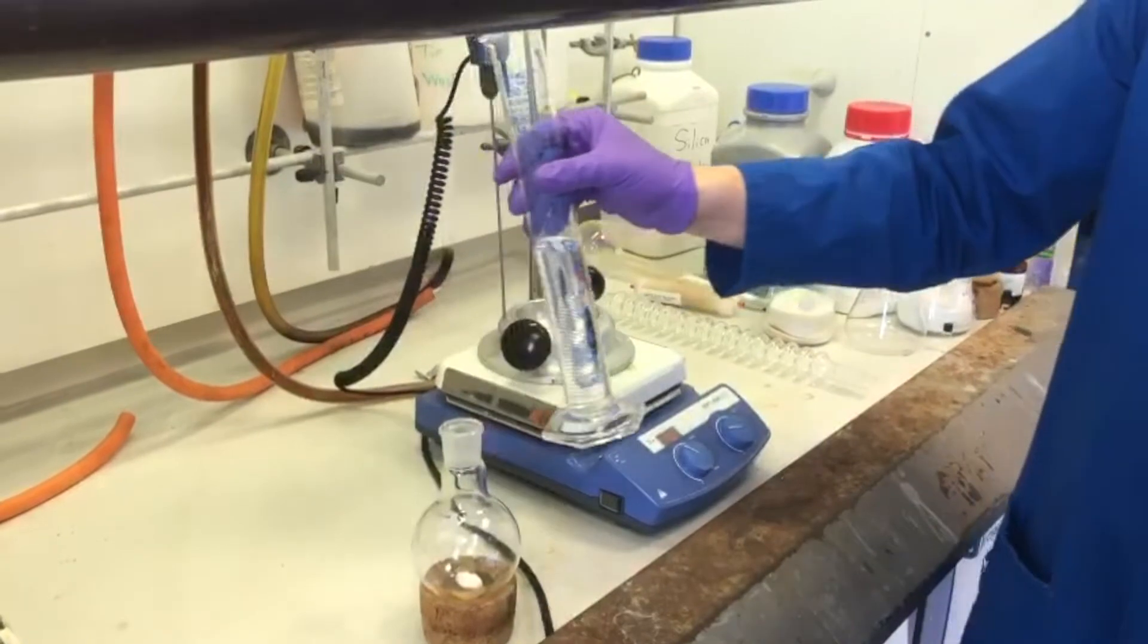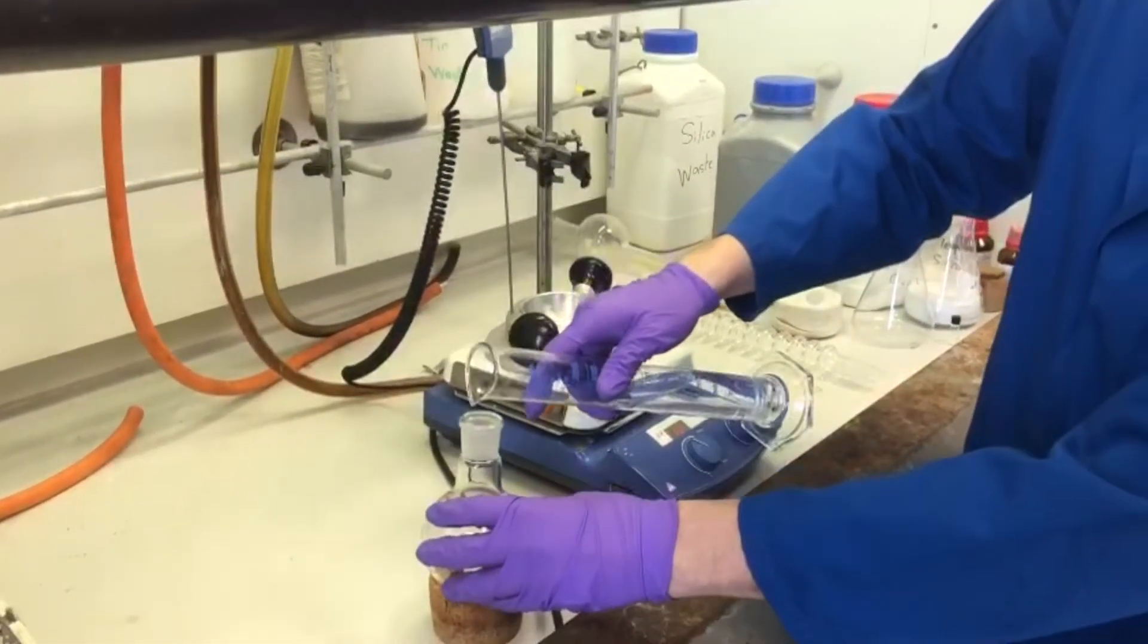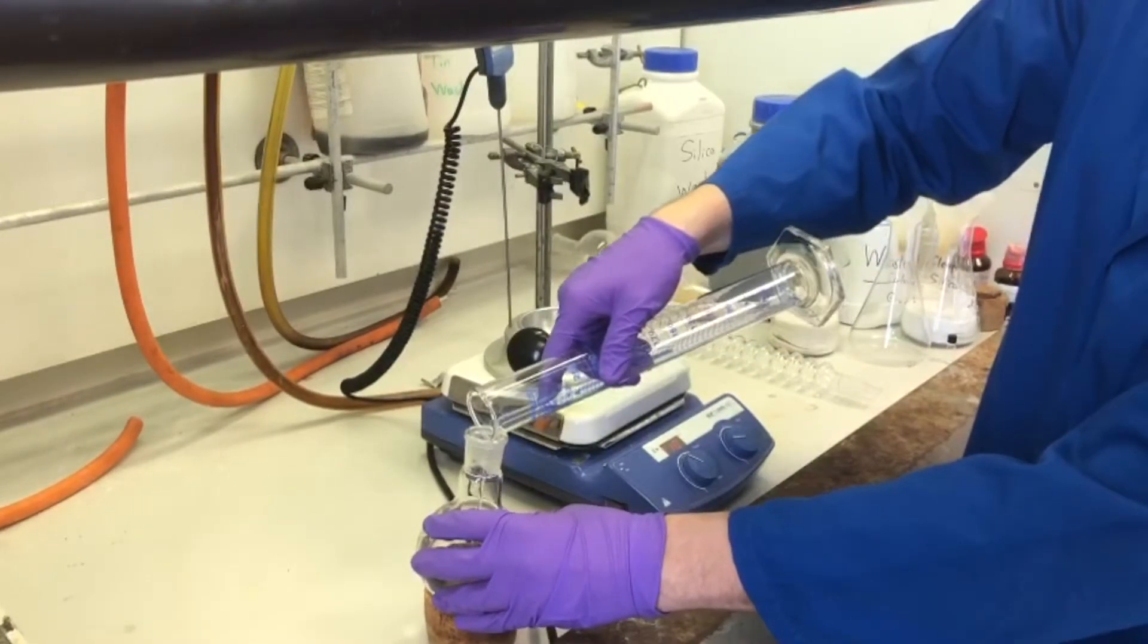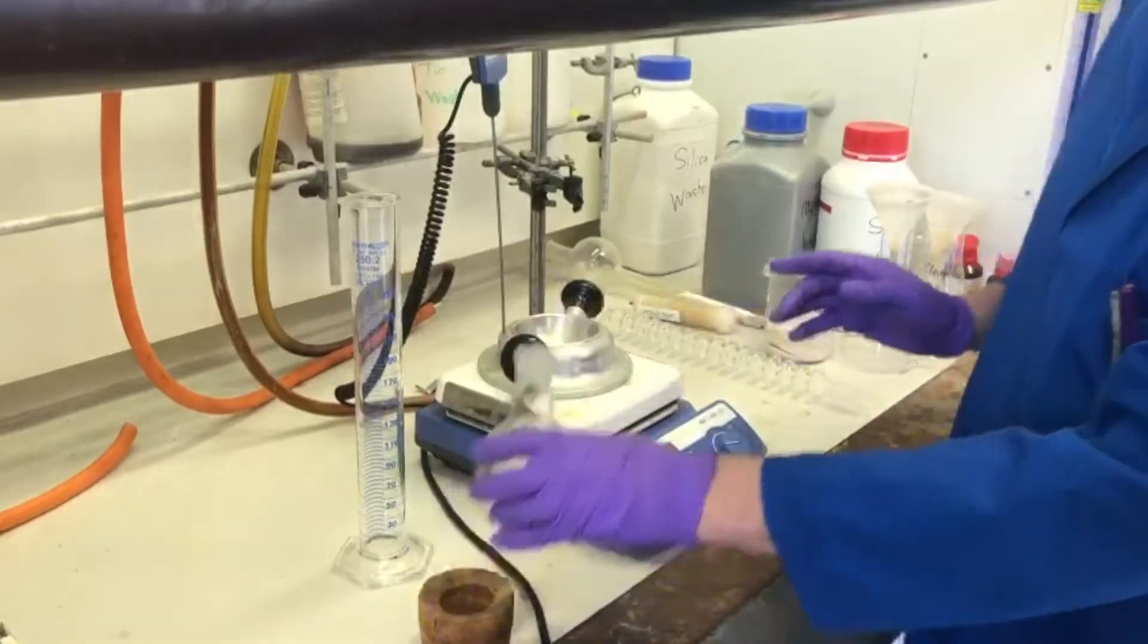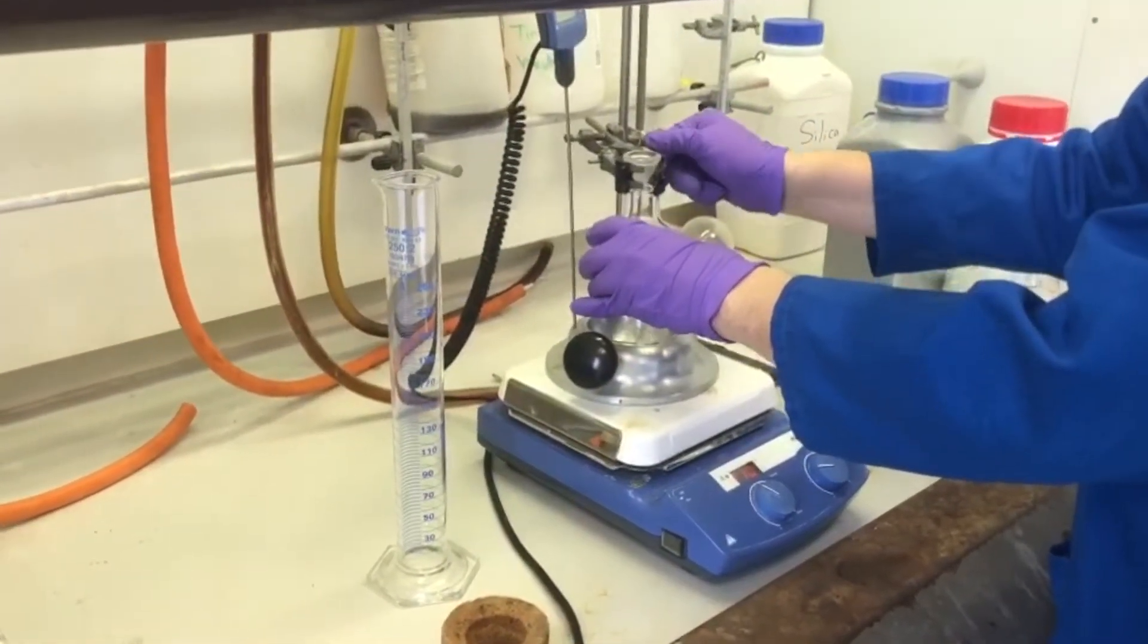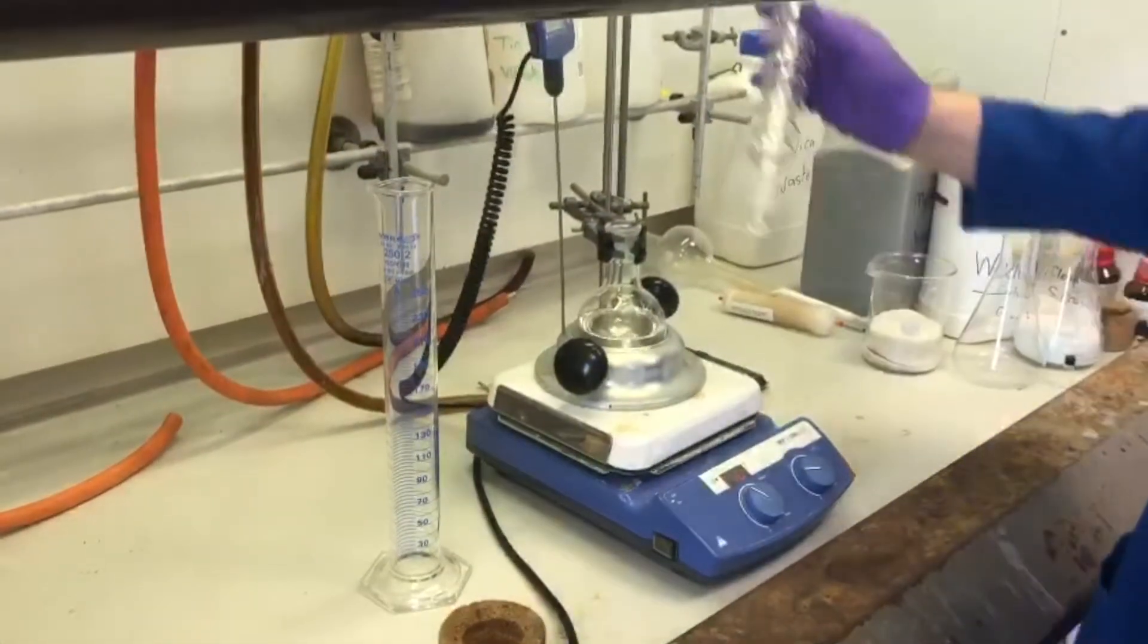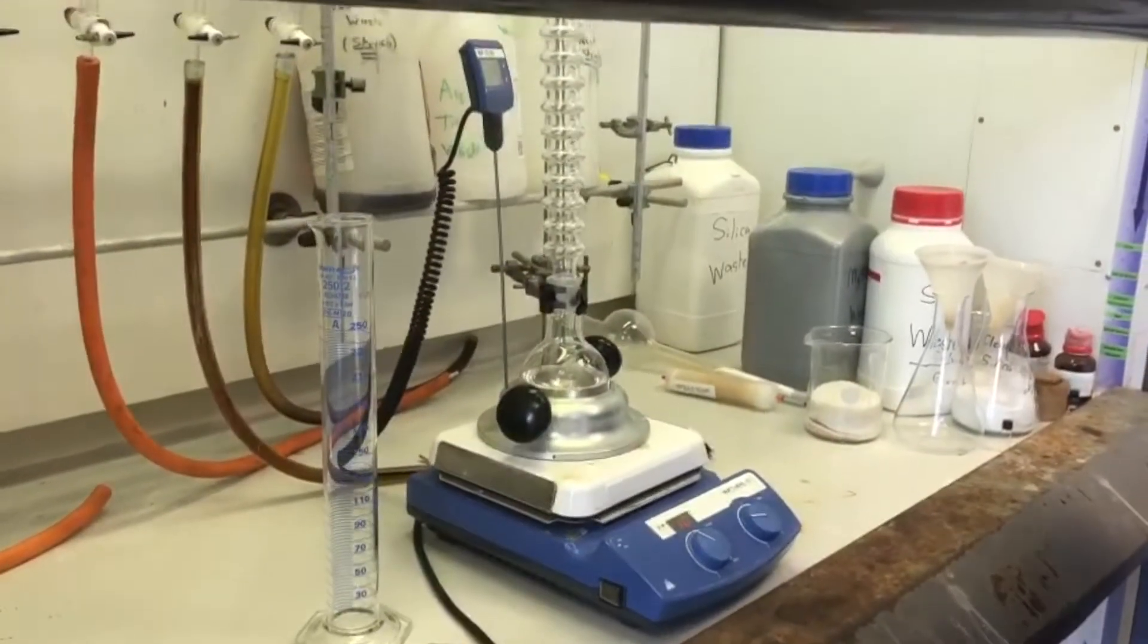And we'll then add our mixture of sec-butanol toluene, which we've pre-measured in a 4 to 1 ratio. Clamp it up, and we'll fit the dry condenser in this case. Leave it to warm up and reflux for an hour and a half.